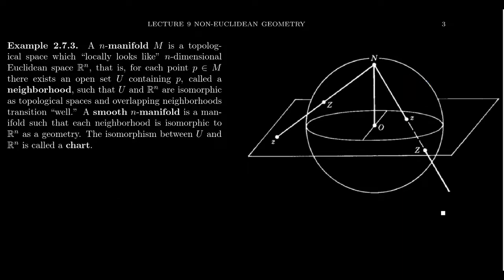After all, doesn't the legend go that the ancients believed the earth to be flat? Why did they think it was flat? Because when you look around you, everything looks flat. And so locally it looks flat, but globally there is curvature — curvature that can be very difficult to see when you look at it really close. Some of the best geometry that happened in the ancient world was used to prove that the earth was in fact round.